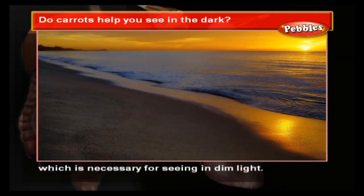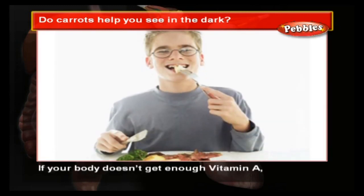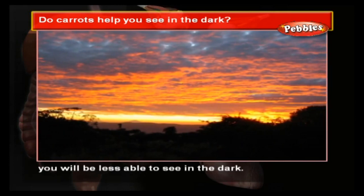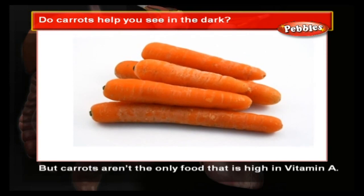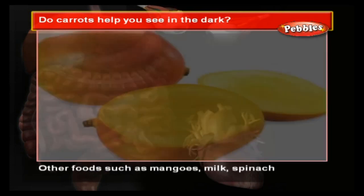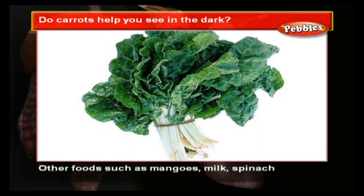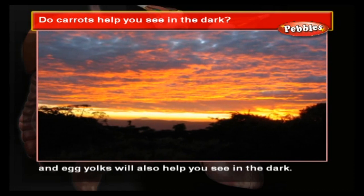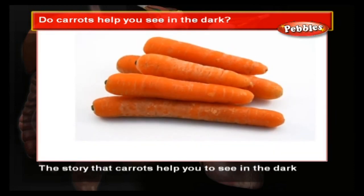If your body doesn't get enough vitamin A, you will be less able to see in the dark. But carrots aren't the only food that is high in vitamin A. Other foods such as mangoes, milk, spinach, and egg yolks will also help you see in the dark.